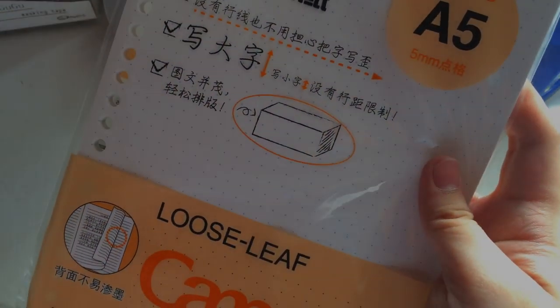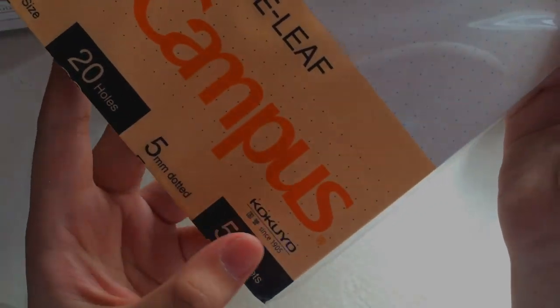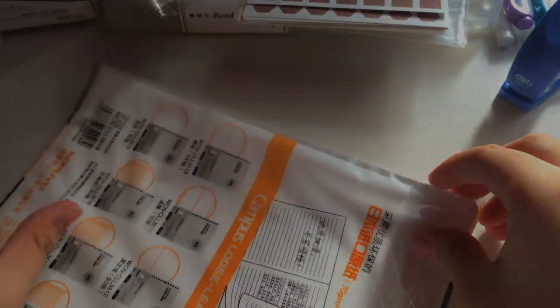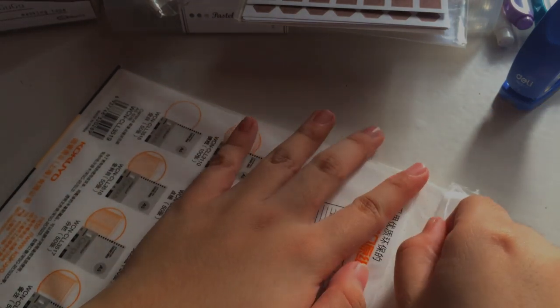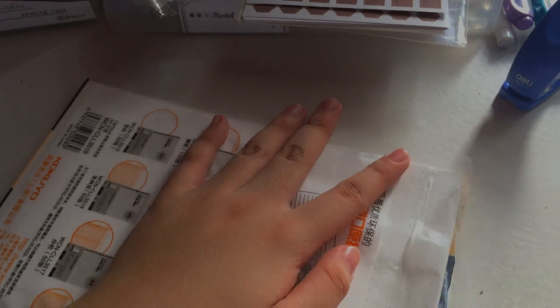So yeah, and then lastly I bought of course some loose leaf. I got the A5 Campus loose leaf refills. This is from the brand Kokuyo, which is one of the famous brands when it comes to buying their refills because their paper quality is actually really nice.